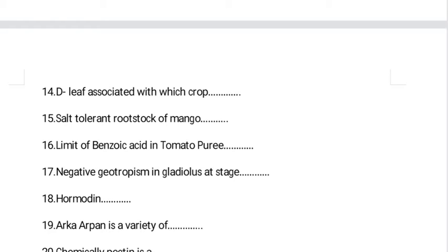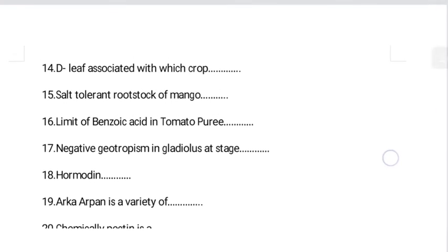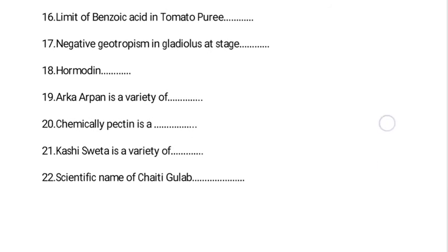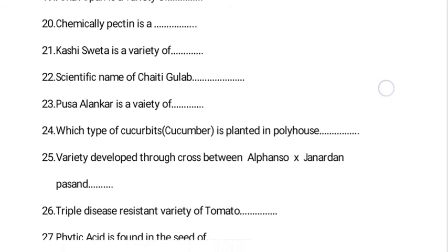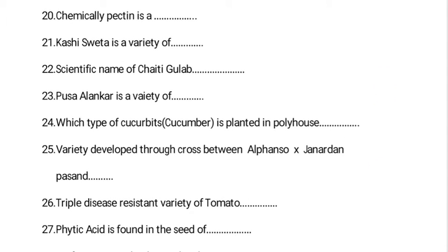The limit of benzoic acid in tomato puree is 250 ppm and in tomato sauce it is 750 ppm. The first synthetic auxin is Hormodin — Hormodin is the synthetic IBA. Another question: chemically, pectin is a polysaccharide.